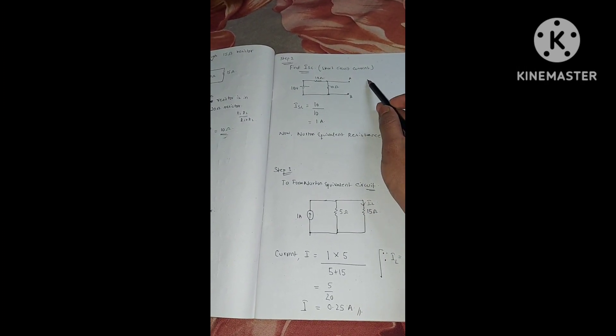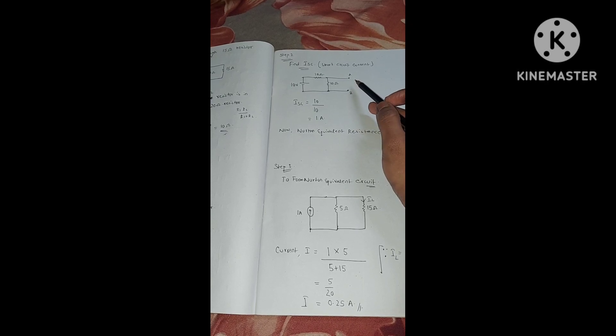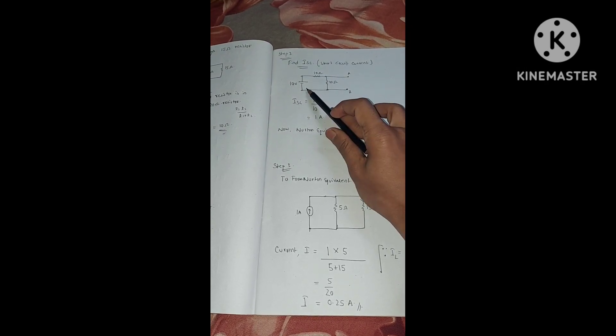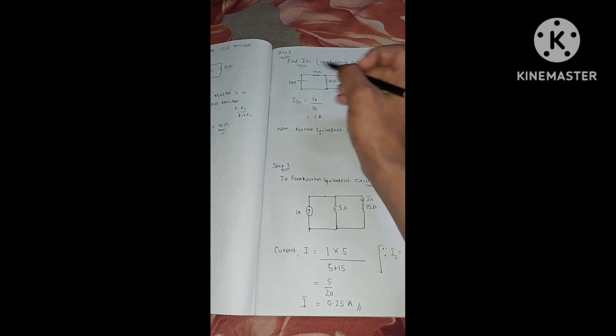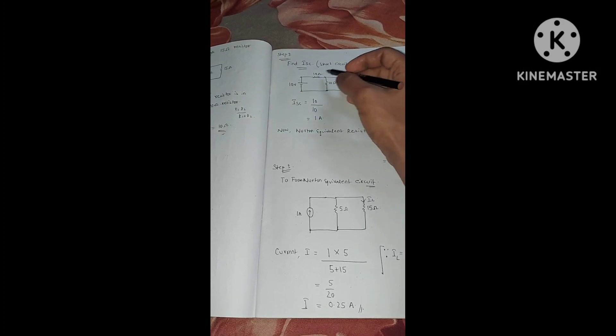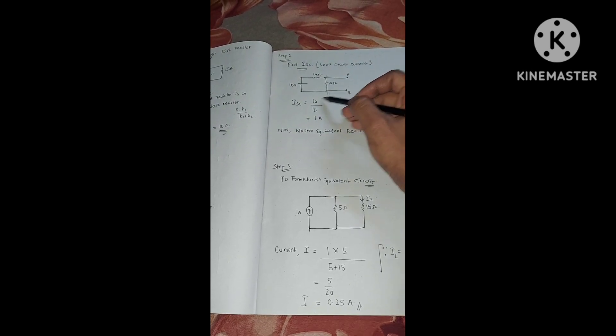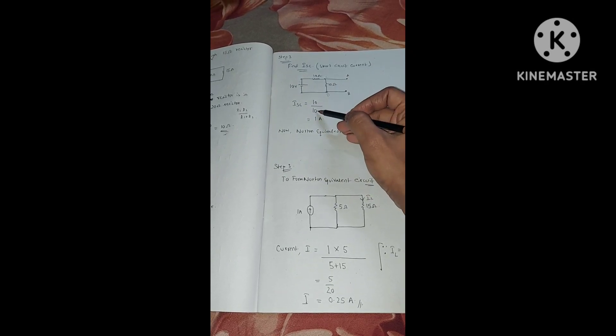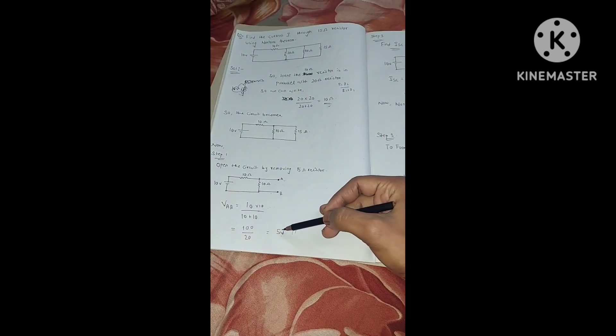Step 2: Find I_sc, the short circuit current. The circuit still has two 10 ohm resistors and a 10 volt supply. I = V/R = 10/10 = 1 ampere. We are finding I_sc across terminals A-B, which is equal to across C-D. So I_sc = 1 ampere.